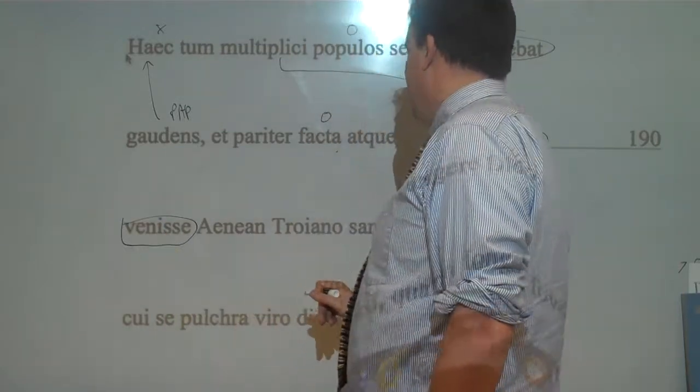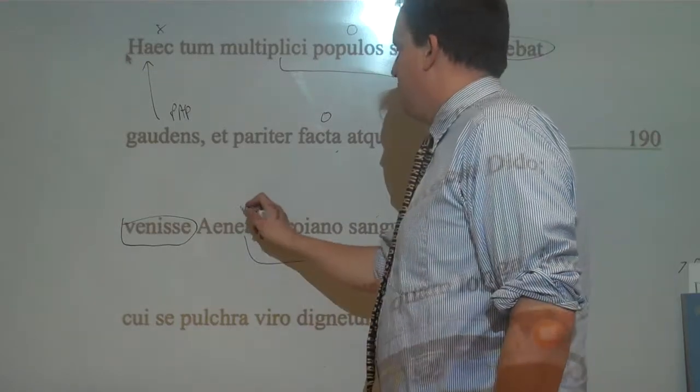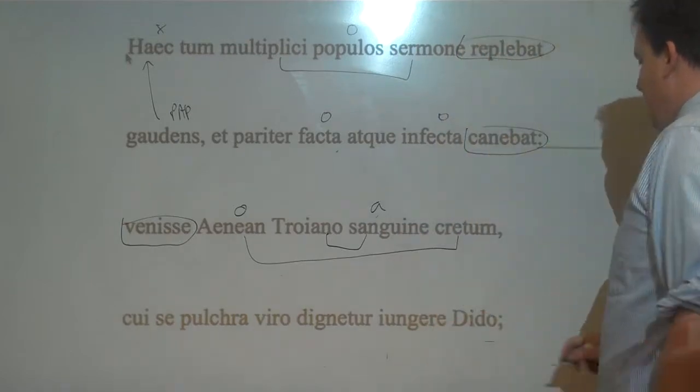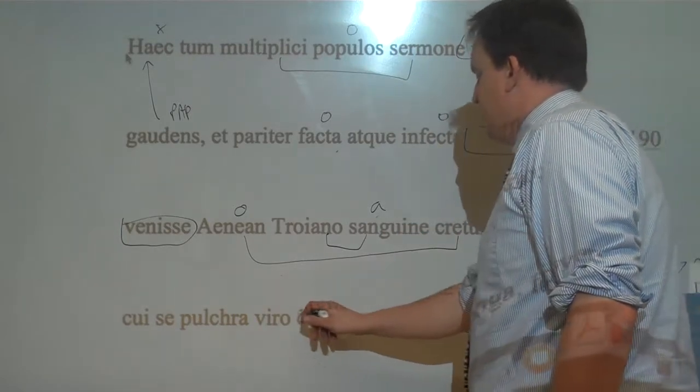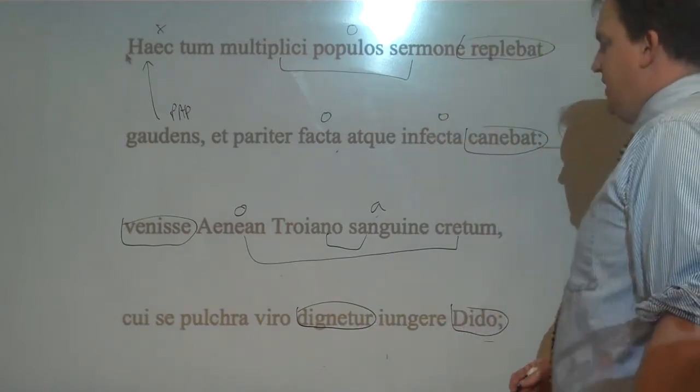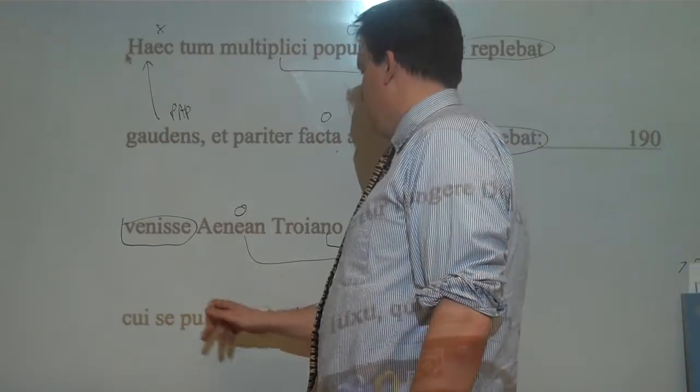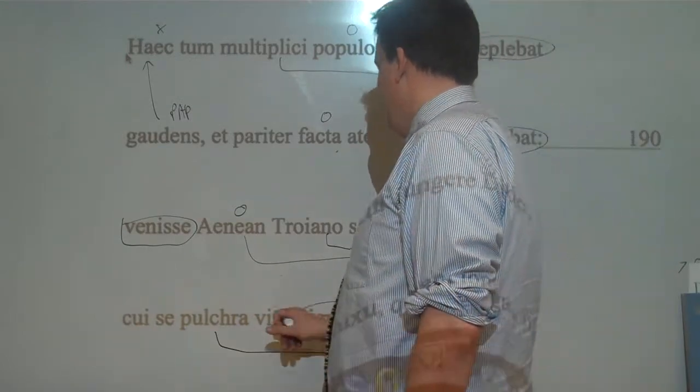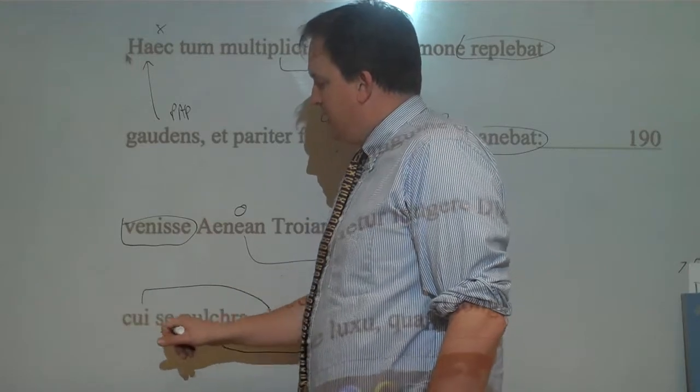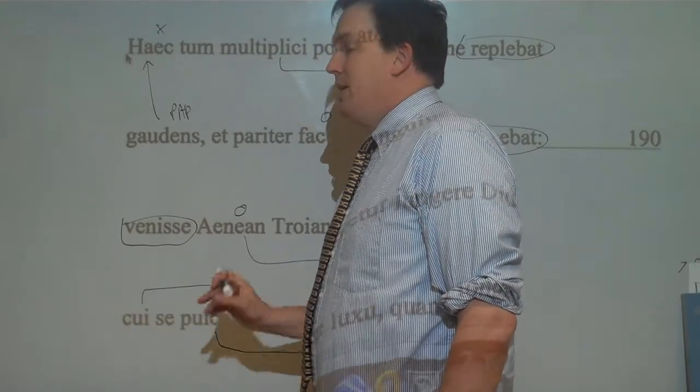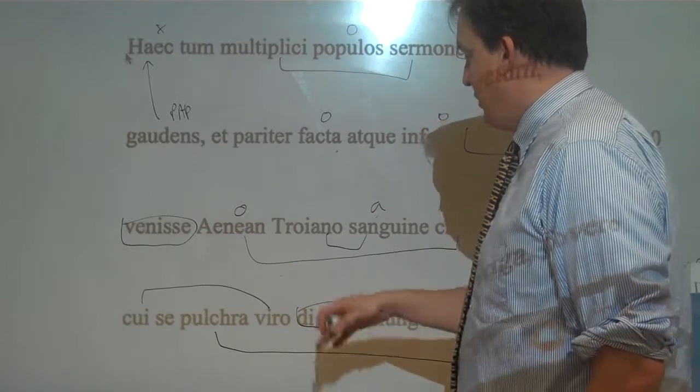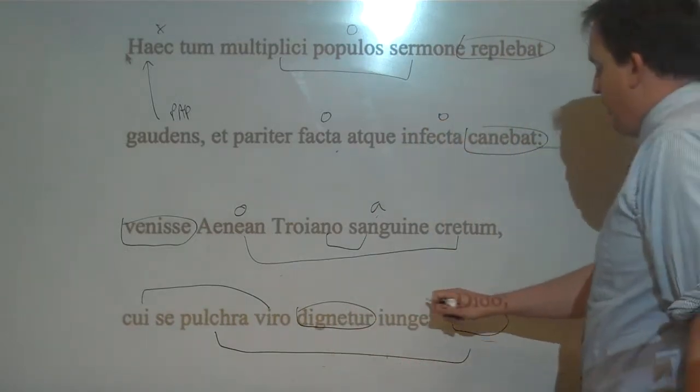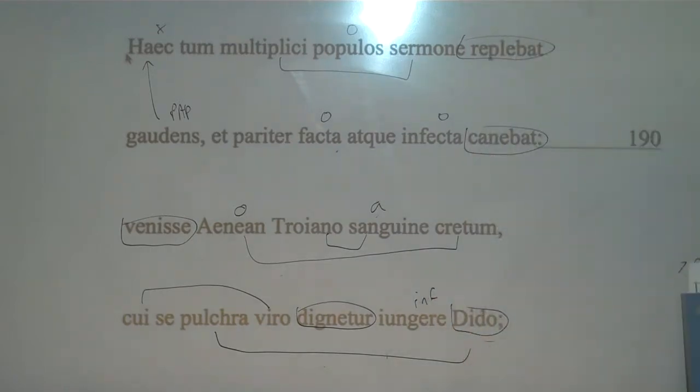Aeneas had come, Kreton, sprung from Trojan blood. To whom Dido deemed, this is present tense of course, deemed herself, or beautiful Dido deemed herself worthy to join the man. So to which man, this is a relative adjective going with viro. To which man, Dido deemed, beautiful Dido deemed herself worthy to join in marriage or in a relationship.